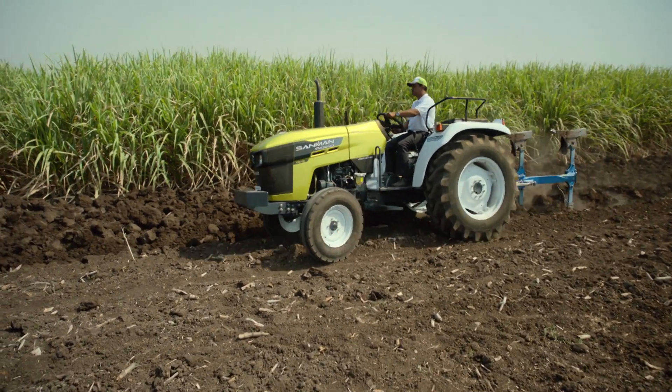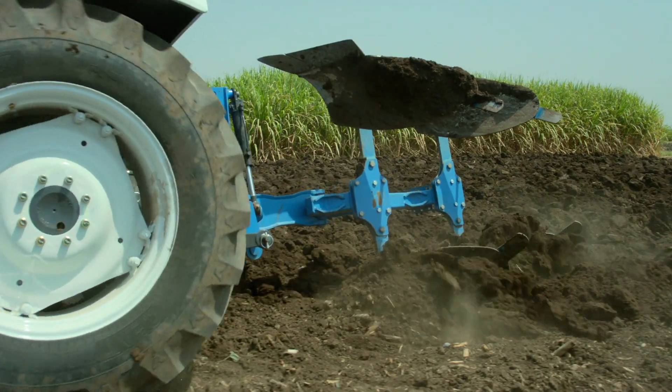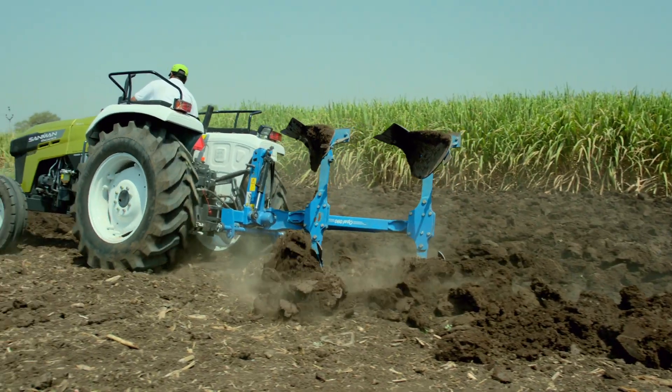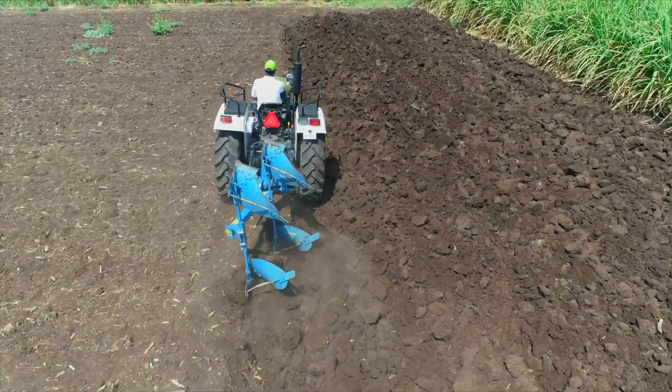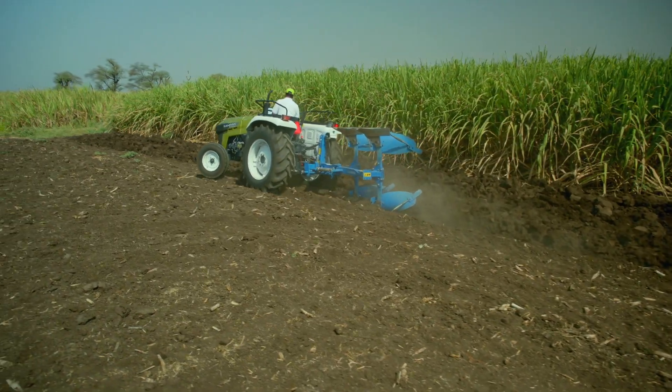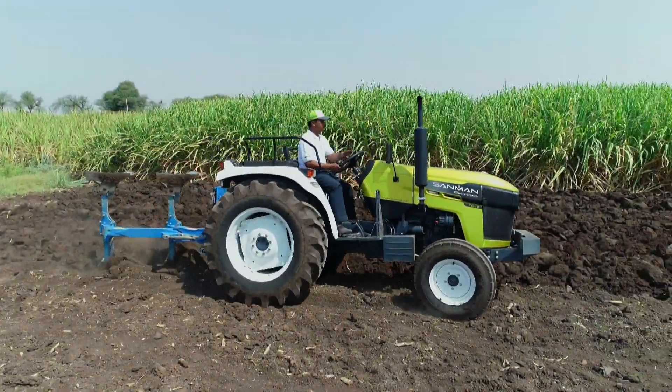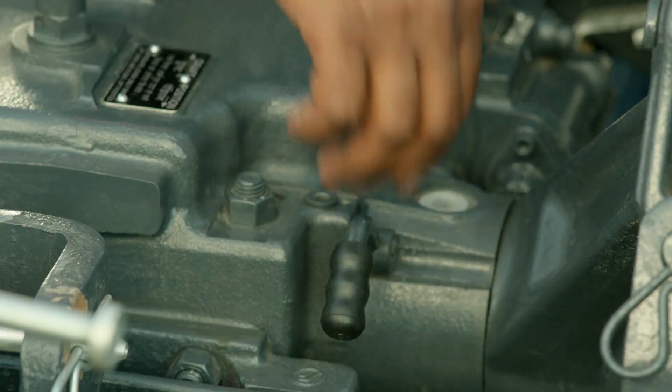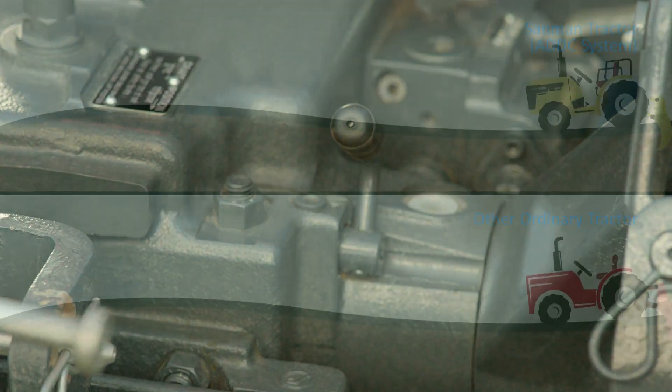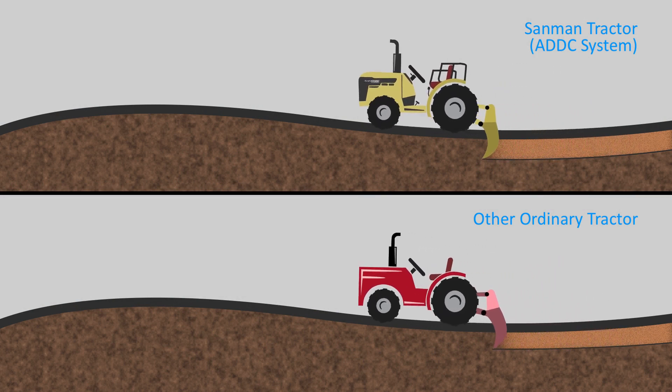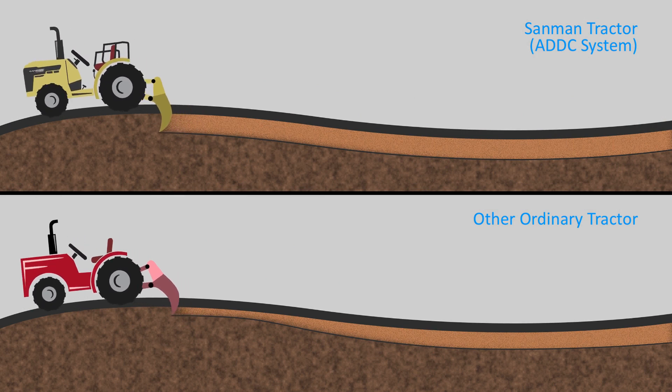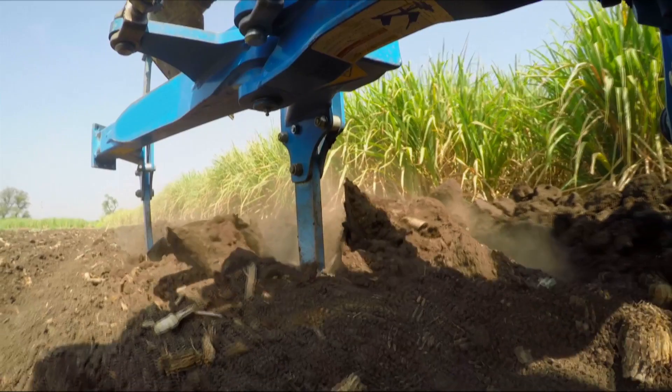During ploughing operations, Sunmark tractor delivers unmatched power and performance in terms of pulling power and uninterrupted working, with its best-in-class torque and backup torque. It can plough smoothly even when the soil hardness varies. Its efficient automatic depth and draft control ADDC system gives precise sensing during ploughing so that it ploughs in all type of soils with accuracy.